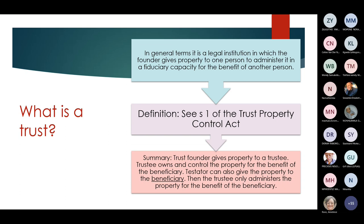Section one of the Trust Property Control Act also defines what a trust is. From that definition, a trust founder gives property to a trustee, who owns and controls the property — not for their own benefit, but for the benefit of the beneficiary. Alternatively, the testator can give property to the beneficiary in ownership, and the trustee only administers it. So either the trustee or the beneficiary is the owner, but it's always for the benefit of the beneficiary.